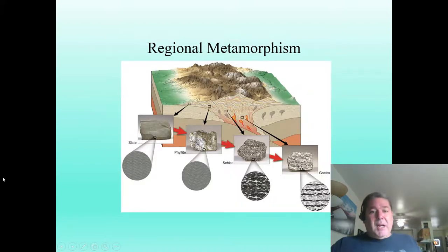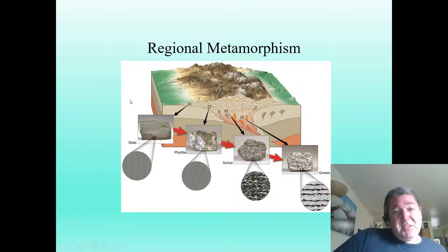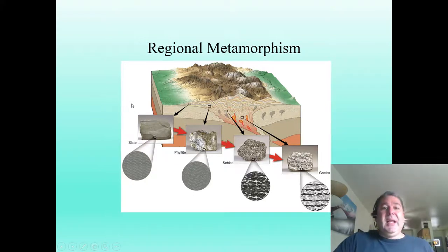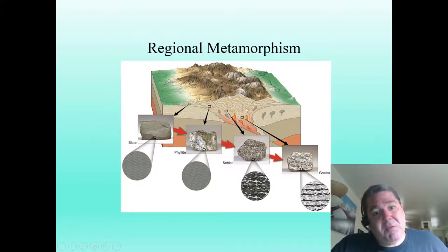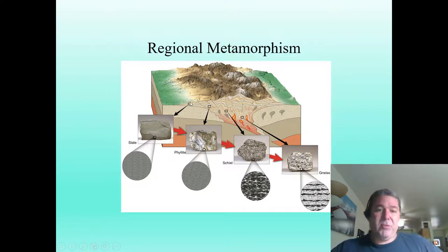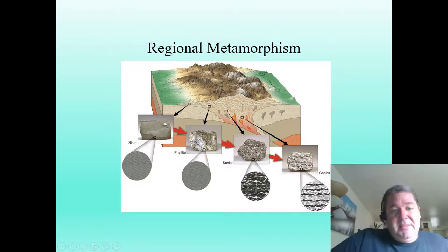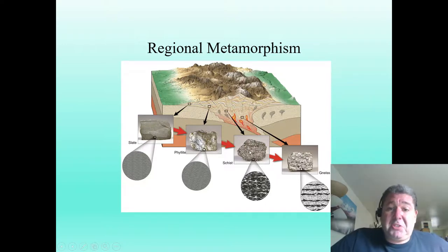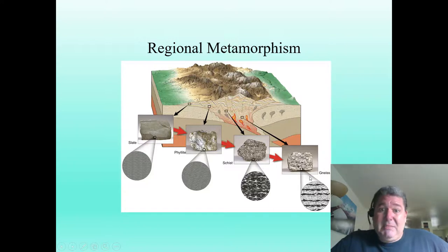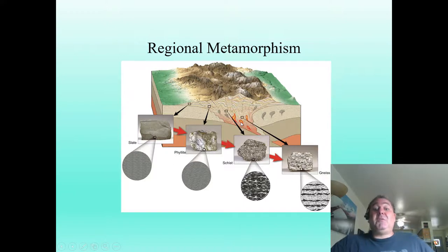Here we see how this works as we compress shale. Let's say we start with unmetamorphosed shale — imagine India and Asia colliding to form the Himalayas. As we get into the metamorphic zone, we get slate. Even deeper into the mountains, we get phyllite. Deep in the roots of the mountains, we have enough heat and pressure to form schist. Even beyond that, gneiss — the most intense. And then past gneiss, some areas where rock has been remelted into magma.